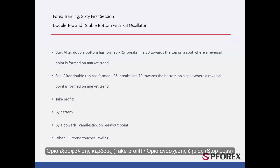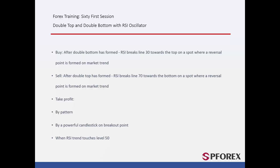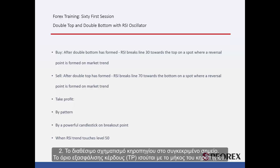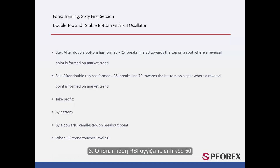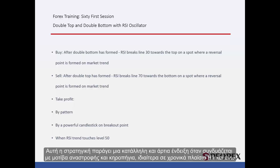Take Profit or Stop Loss. Take Profit price can be determined by, firstly, the available reversal pattern in a market price on the spot where the RSI line crosses level 30 towards the top or level 70 towards the bottom. Secondly, the available candle pattern on the spot — TP amount equals the length of a candle. And thirdly, whenever the RSI trend touches level 50. Stop Loss can be specified by a candle or a reversal pattern on a market chart. This strategy will generate a suitable and sound signal when combined with reversal patterns and candles, especially on H1 and longer timeframes.